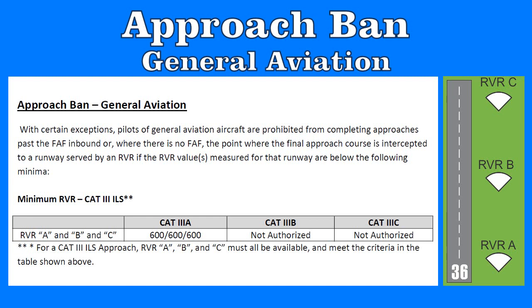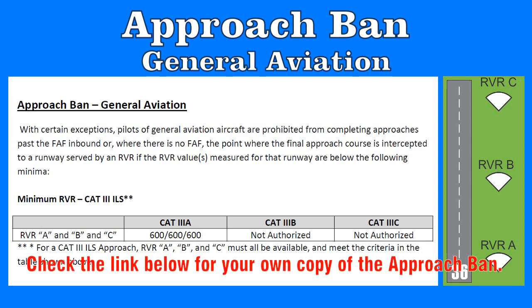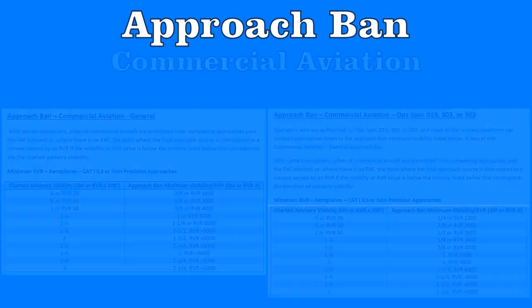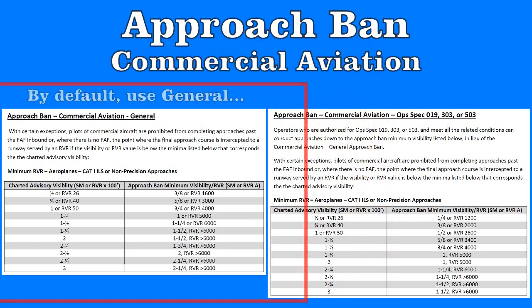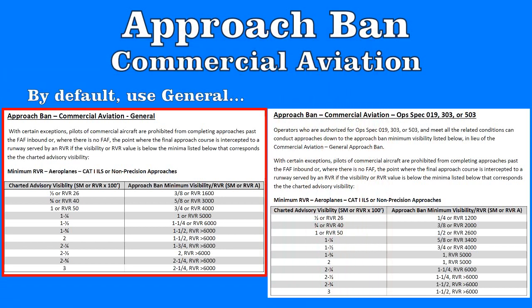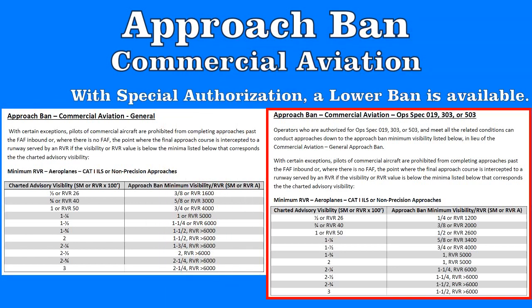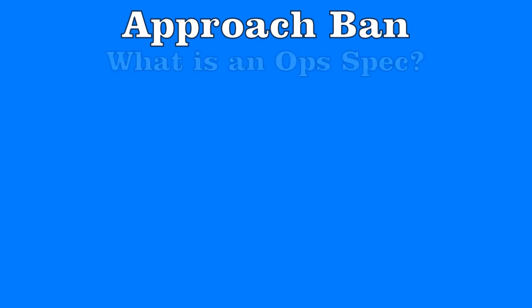That was fairly simple, but there's nothing to memorize here — everything is available through the link included in the description below, so you can either print it out or keep it handy for whenever you're flying. If you're a commercial operator, the restrictions are a little more complicated and vary based on the advisory visibility for the approach. There are two sets of criteria for commercial operators: a default general commercial operator approach ban, and then an OPSPEC-specific approach ban. Any operator in Canada must automatically use the default general approach ban unless they receive special approval from Transport Canada for the alternate lower ban. This special approval is known as an operations specification, or OPSPEC.